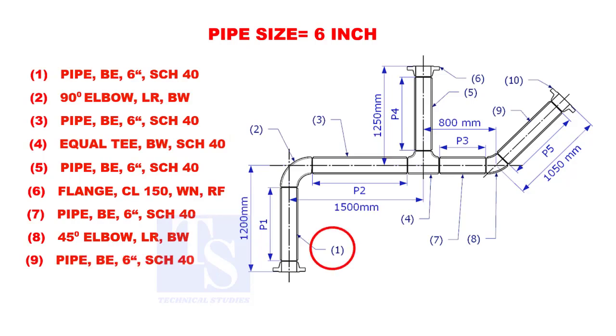Let us calculate the length of pipe 1. To calculate the length of pipe 1, we need to reduce the flange height and the elbow center from the measurement 1200mm.